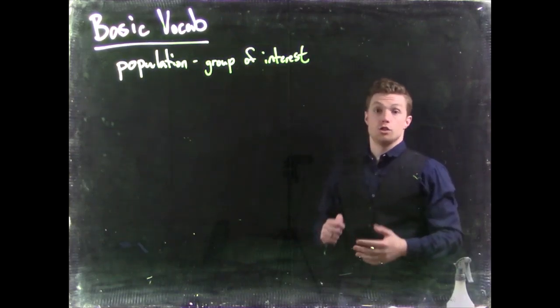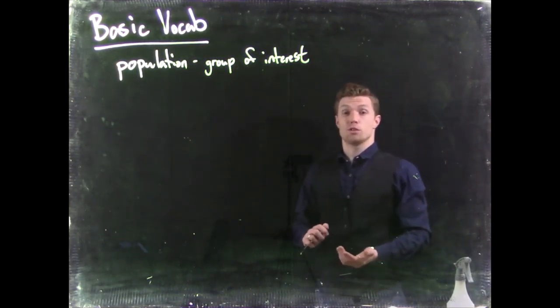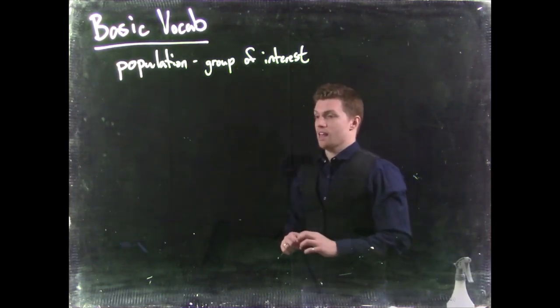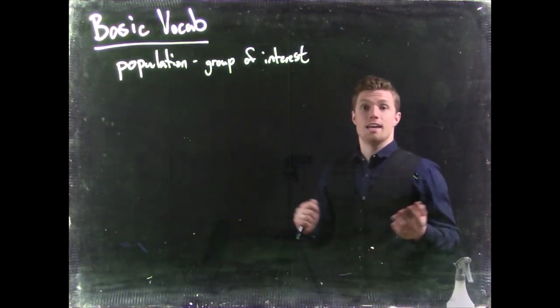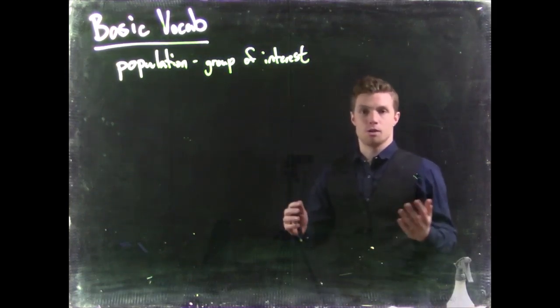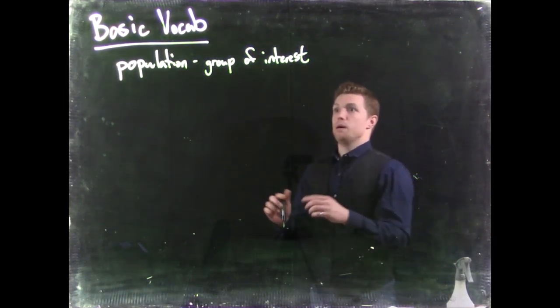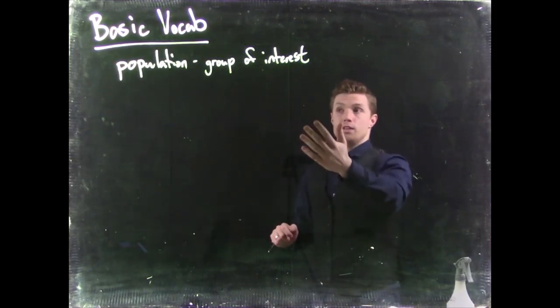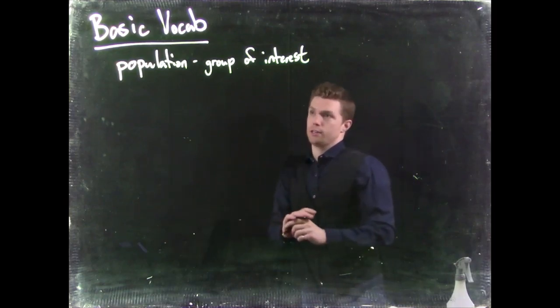Now when we have this group of interest, usually we've got a question about them that we're trying to ask. It could be something as simple as what's the average height of people in the United States. It could be how fast can a hummingbird beat its wings, but it's usually about some group like hummingbirds or about people in the United States. We've got some group that we're interested in.